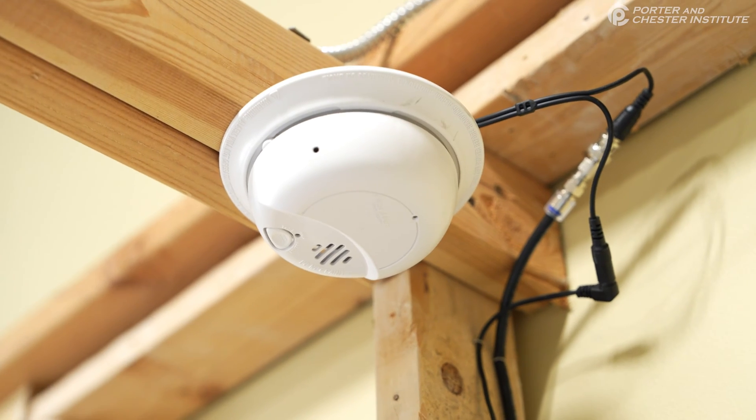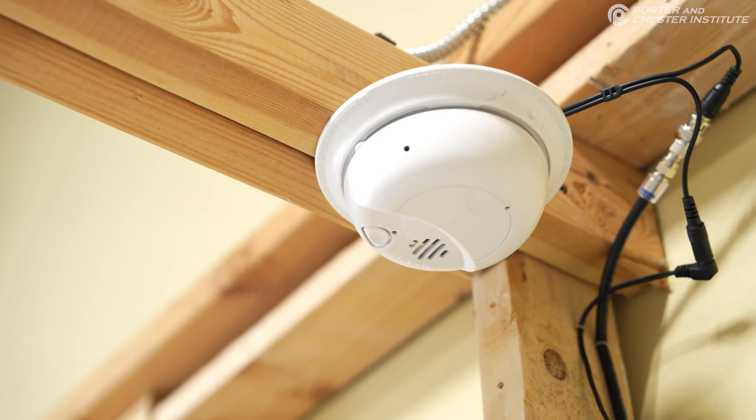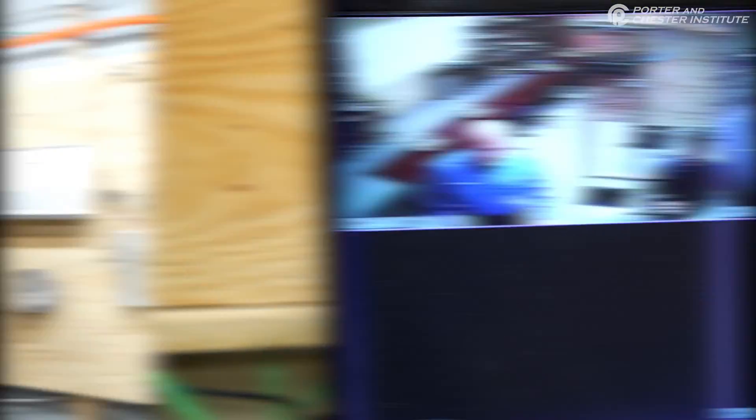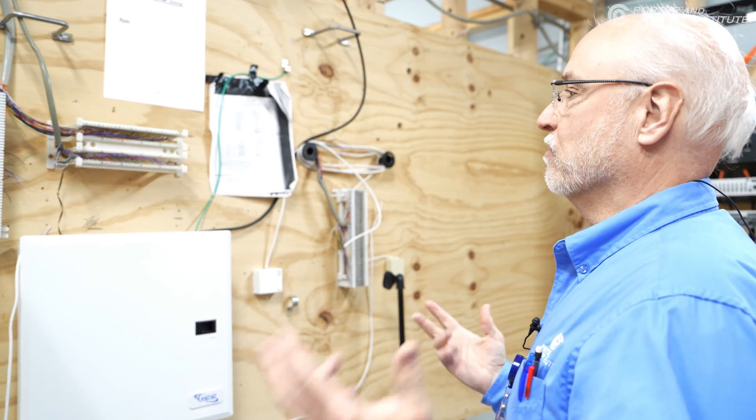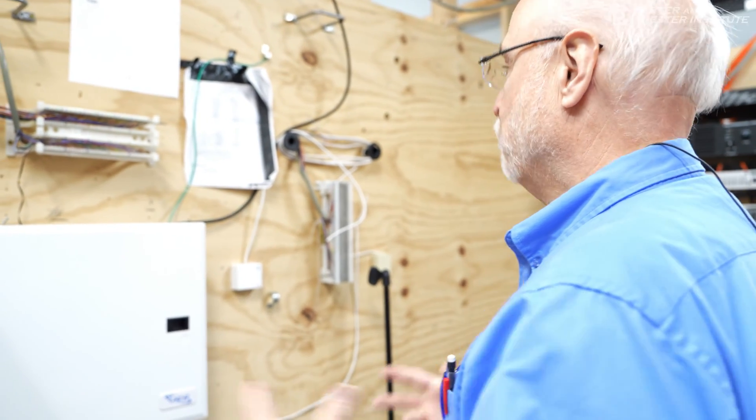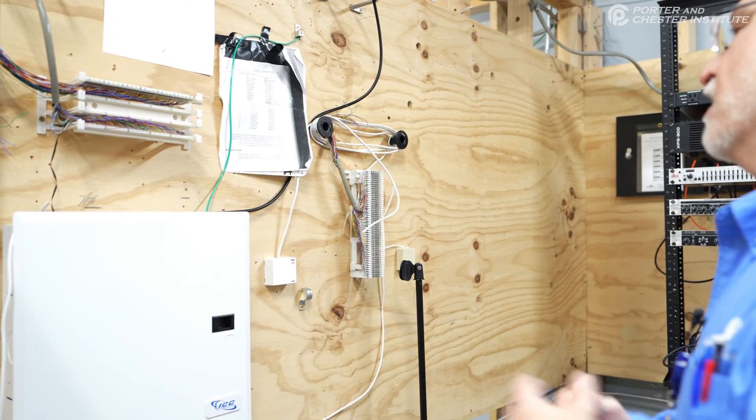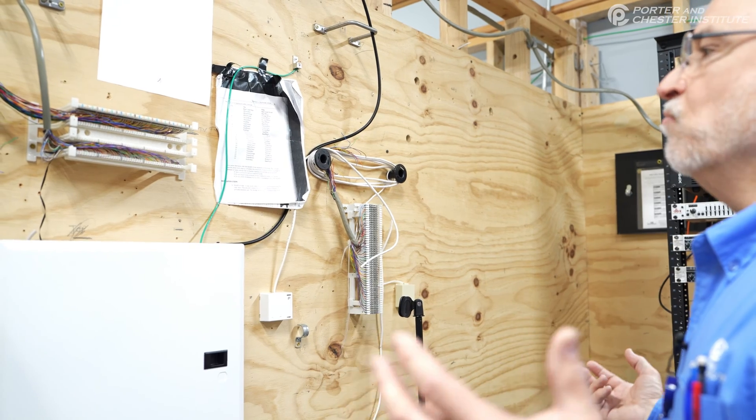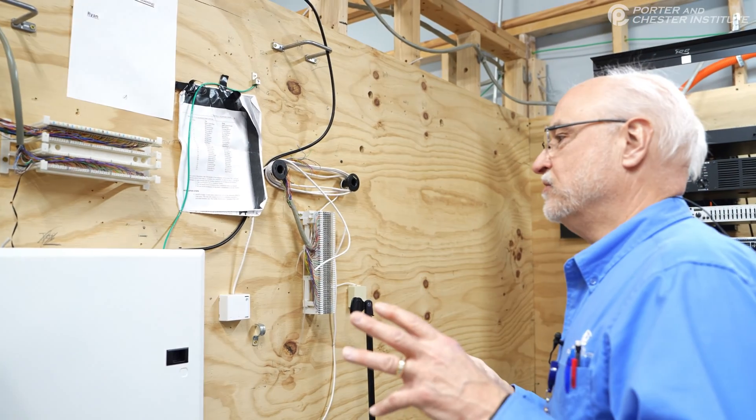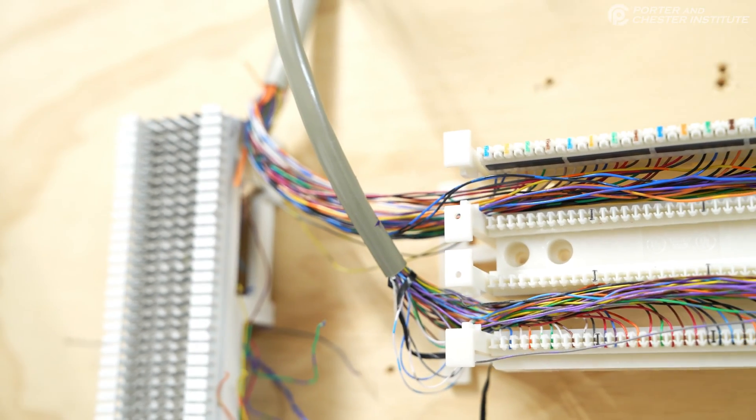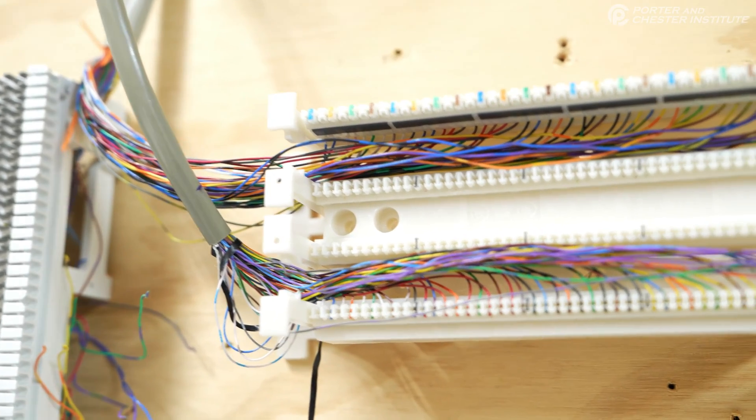If you think about a telephone system or a data drop, typically these wires have to come all into a single location. So let's visualize a school of 50 classrooms. So somewhere there's going to be a main area where all these data points come back, and they would be punched down right here in a particular order by color, and that's part of what we do here.